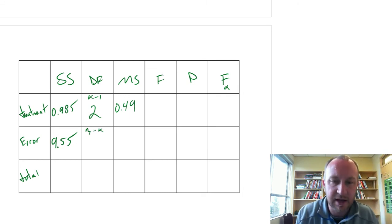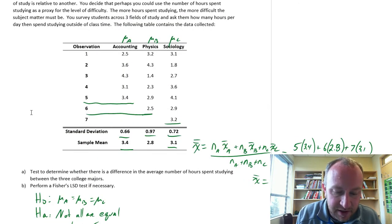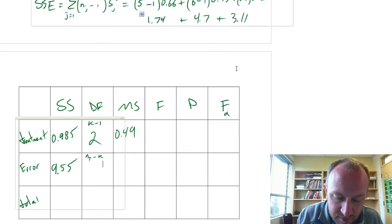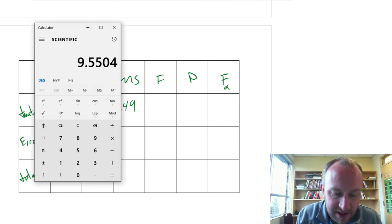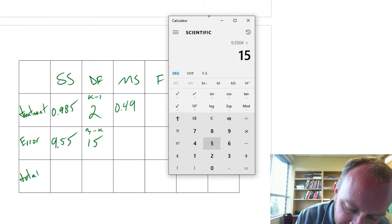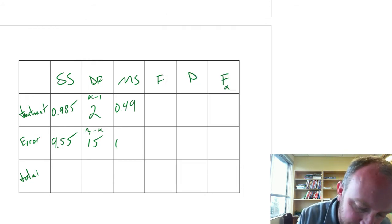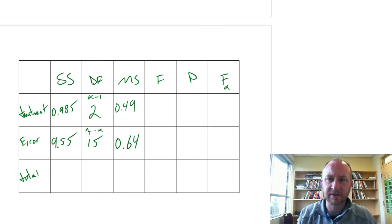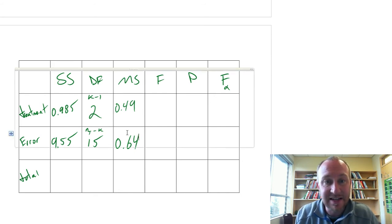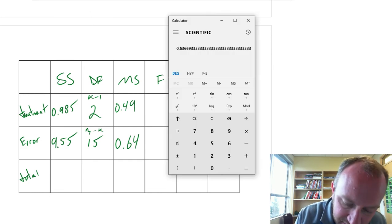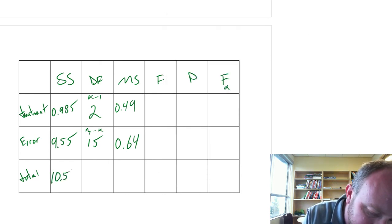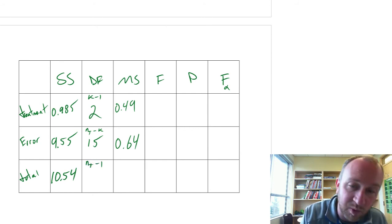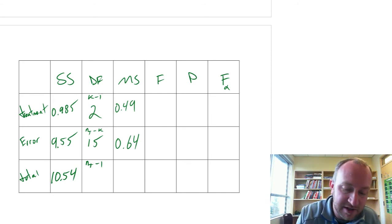Degrees of freedom, Nt minus k, okay, so Nt is the total number of observations, here I have 5 plus 6, plus 7, that's going to be 18 observations, so 18 minus 3 treatments, I have 15 degrees of freedom, and so our mean squared error is 9.55, divided by 15, 0.64, good, much faster this time around, I think, compared to our first video, so SST, now we just need to add up SSTR, and SSE, so this is 0.985, plus 9.55, 10.54, and degrees of freedom here, Nt minus 1, so that would be 18 minus 1 is 17, which is also 15 plus 2.